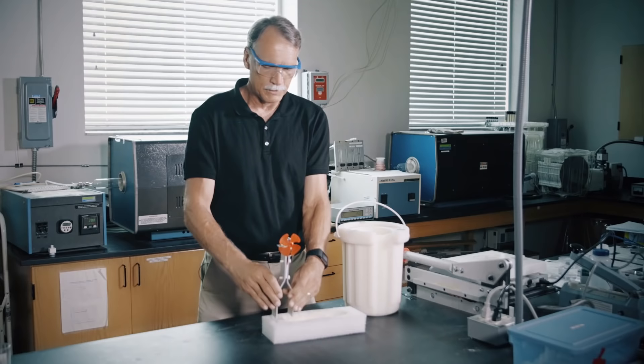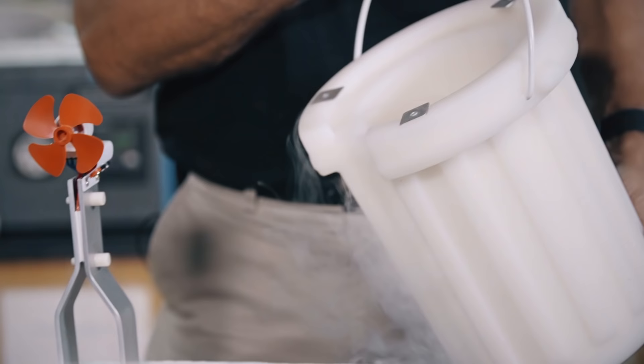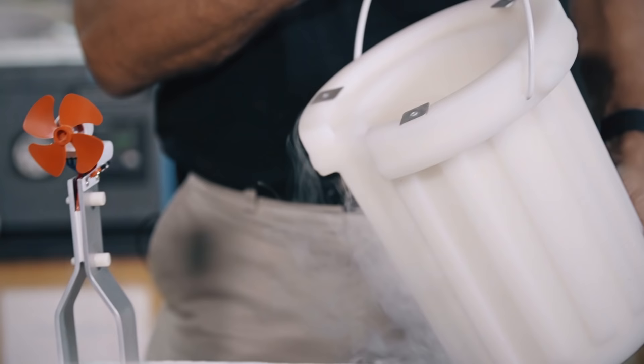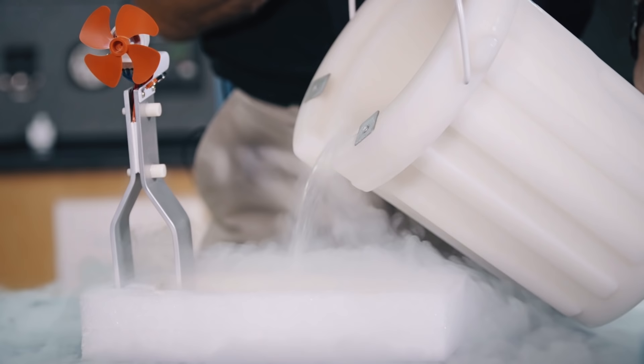So in order to generate the temperature difference, I could either heat one side and keep the other at ambient temperature. Or in this case, I'm going to go ahead and cool one side and keep the other one at room temperature. So what I have here is some liquid nitrogen. So as I pour this in, the temperature difference should start to generate an electric current, which will then make the fan blade run.